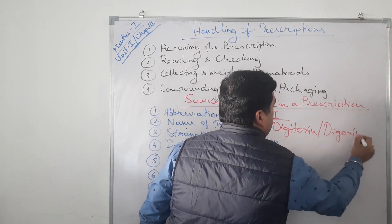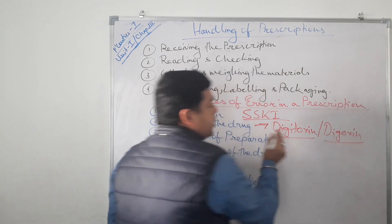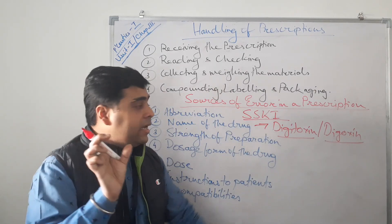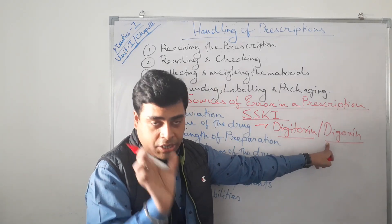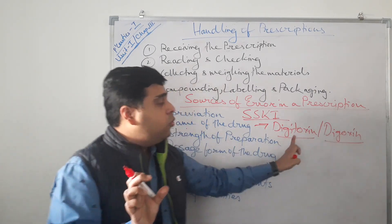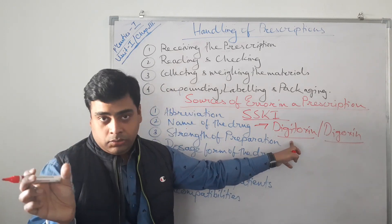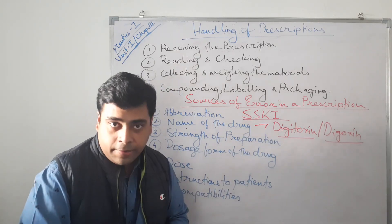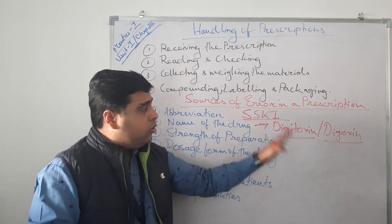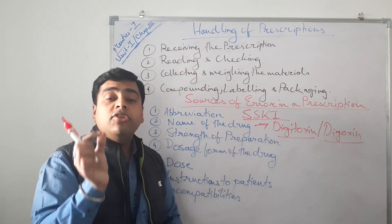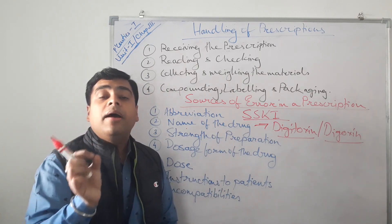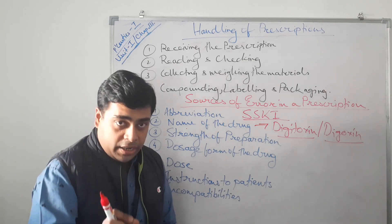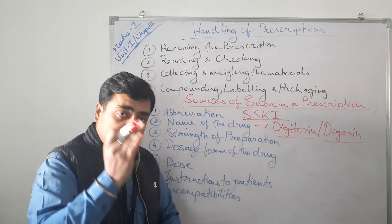Another source of error is similar drug names. For example, digoxin and digitoxin have almost the same pronunciation but different uses. Due to such similarity in drug names, the pharmacist should cross-check with the physician before dispensing the medication.